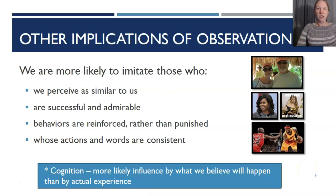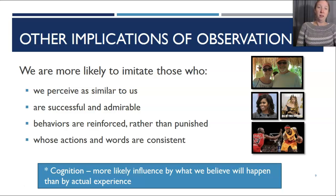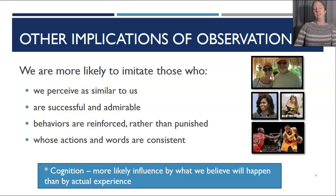Psychologists have found that regardless of whether behaviors are pro-social or anti-social, we are more likely to imitate those we perceive as similar to us, those who are successful and admirable, and people whose behaviors are reinforced rather than punished. We are also more likely to imitate those whose actions and words are consistent — if a public figure claims they will do something and follows through, we're more likely to copy them than someone who makes a promise they don't keep.